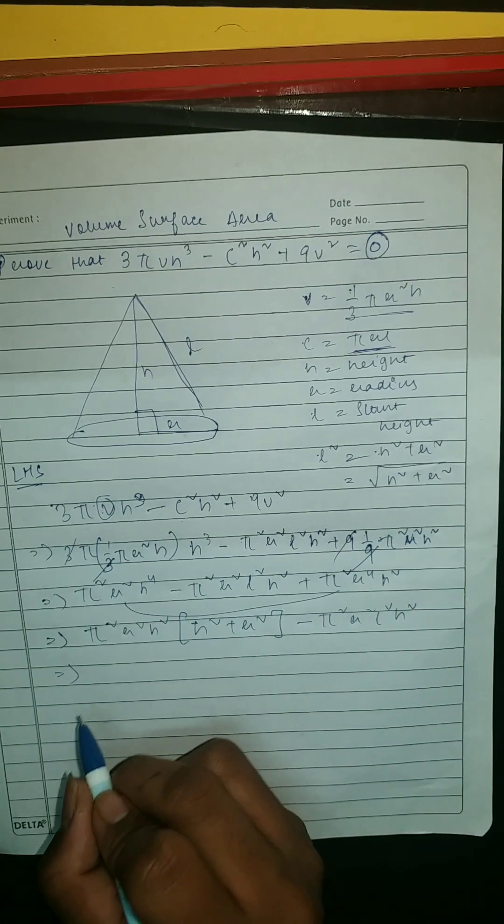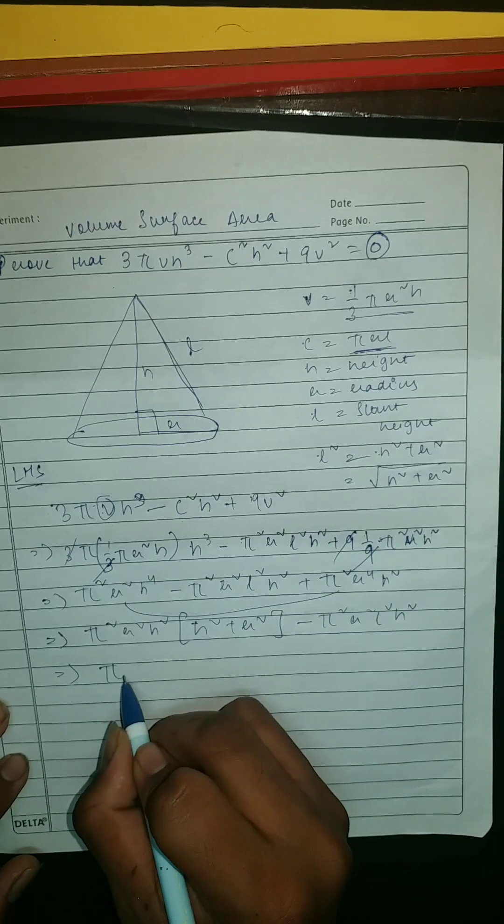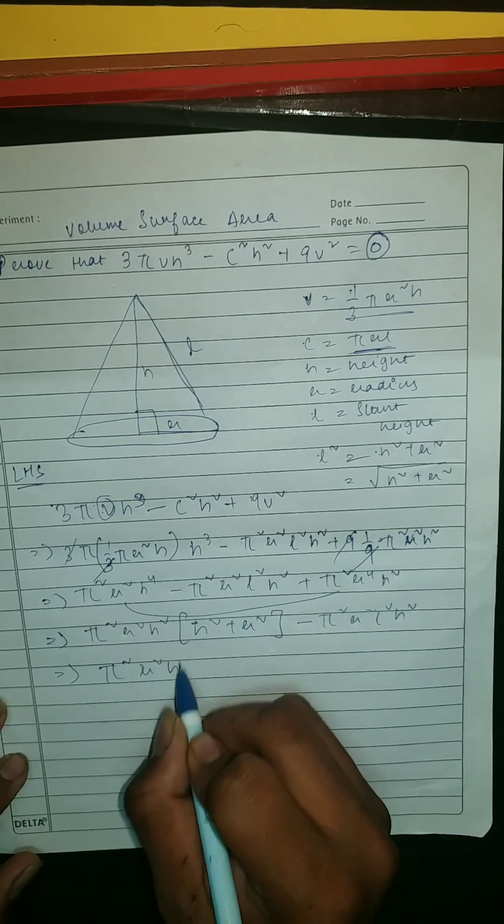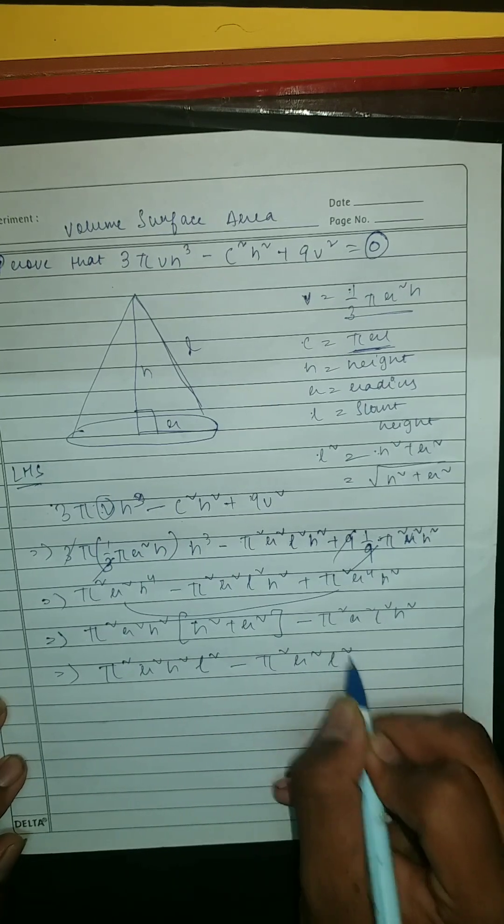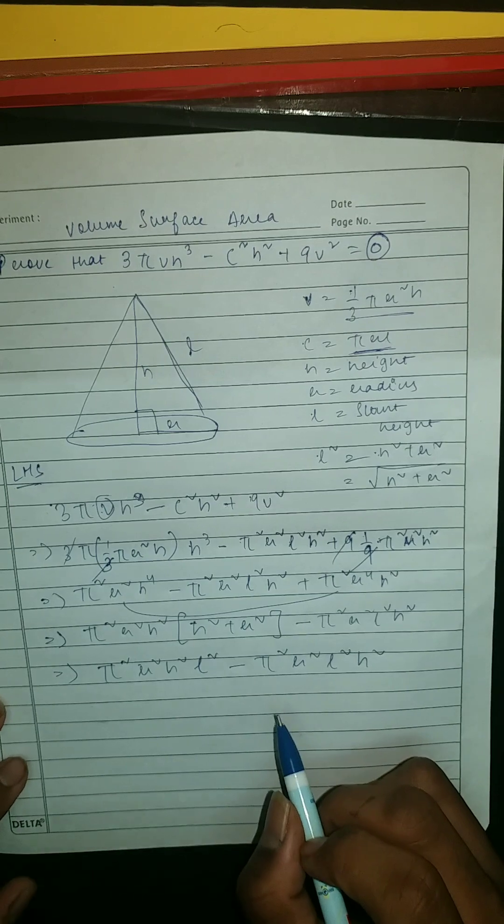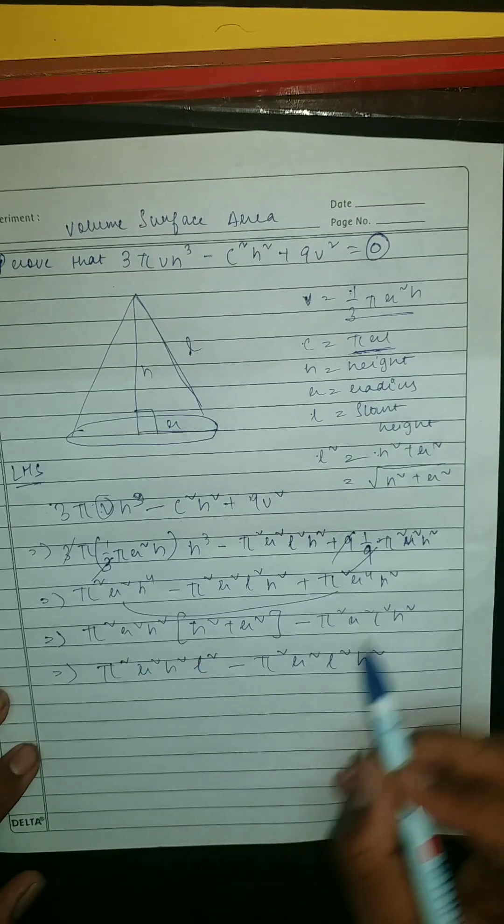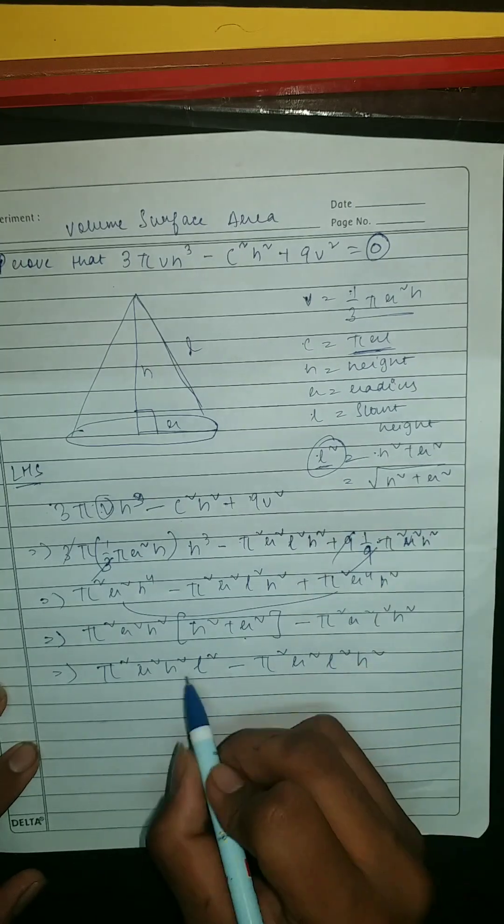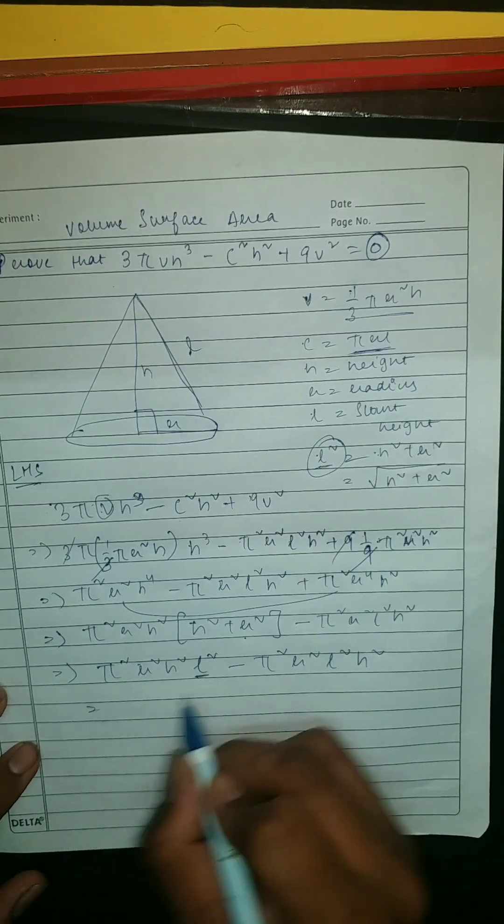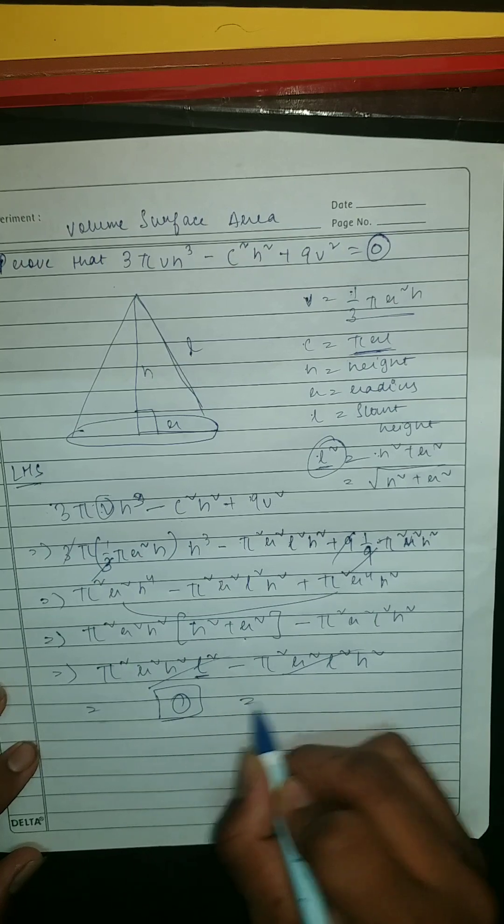Then here simply what we're gonna do, we're gonna do π²r²h²l² minus π²r²l²h². Because as we can see, this is h² + r² which is your l² when you root this. Then once we do this, so this and this cancel, so we are left with zero which is equal to RHS.